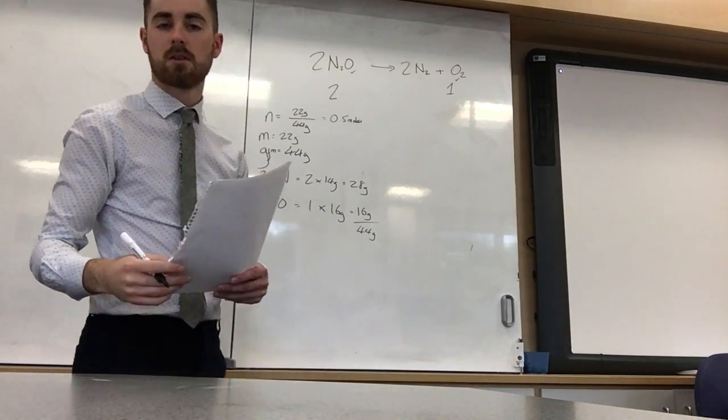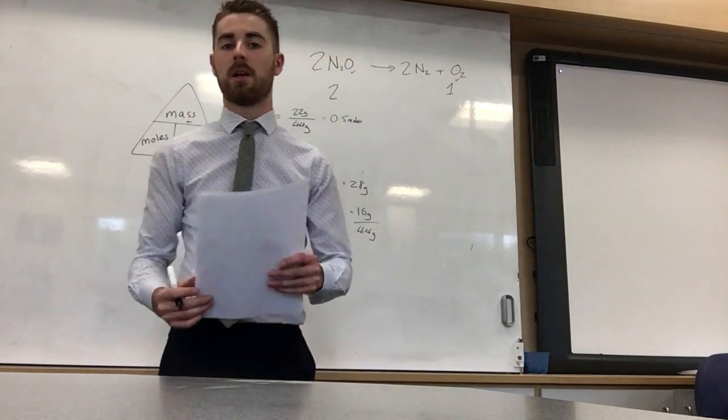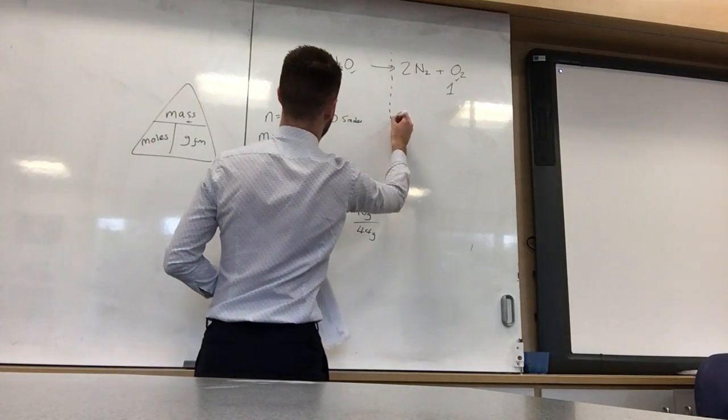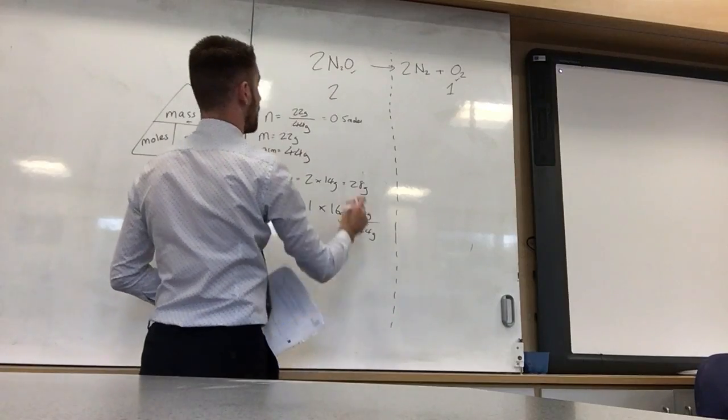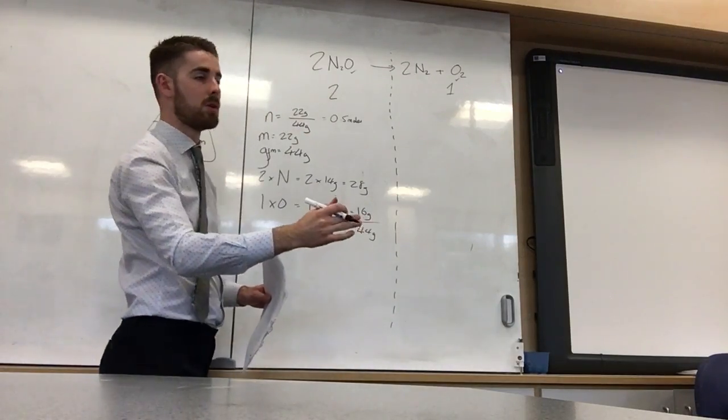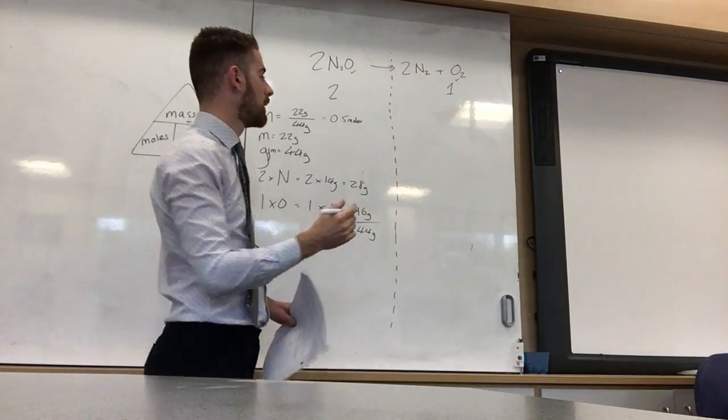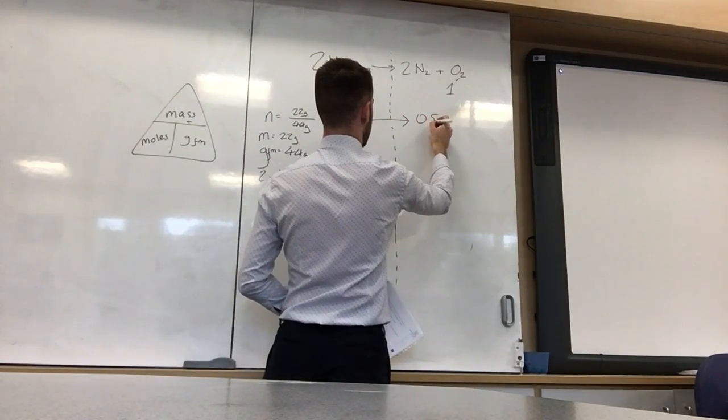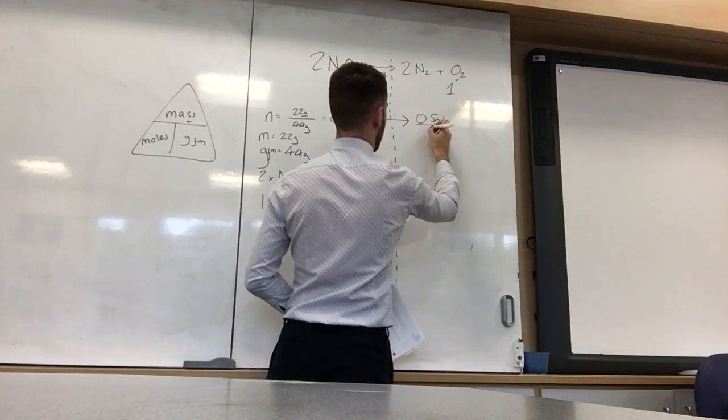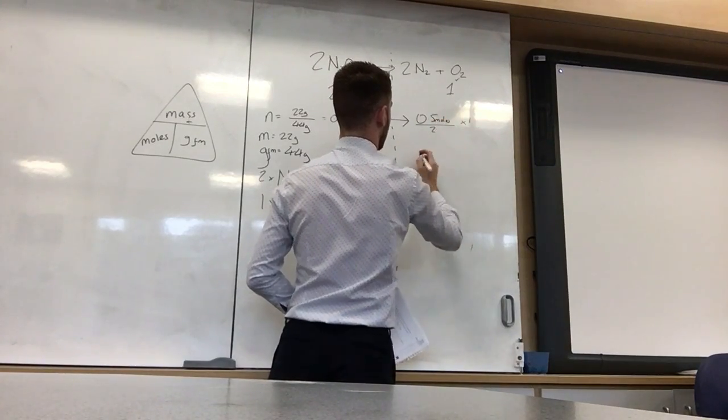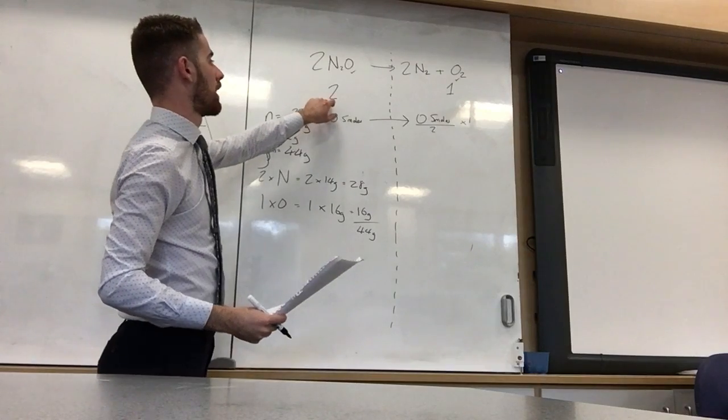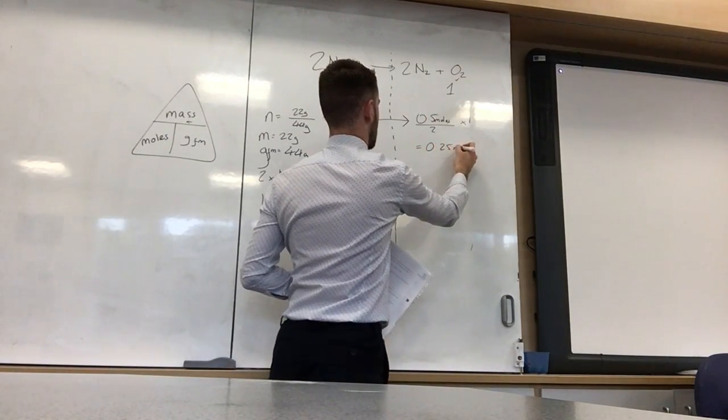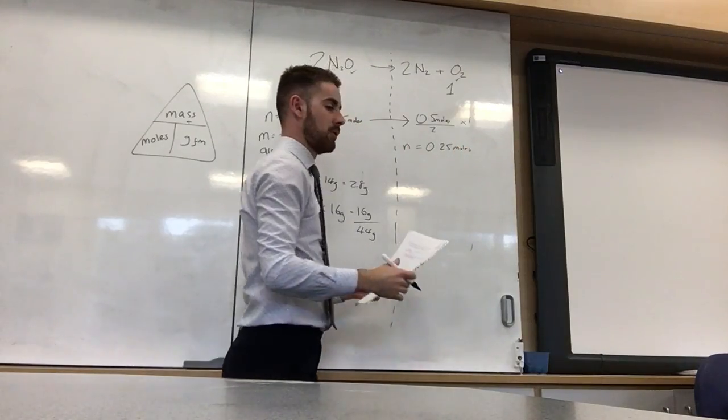So we have 22 grams of dinitrogen monoxide, which equates to 0.5 moles. So let's draw a dotted line down to separate. Now, the 2 to 1 ratio, which means find how many moles of oxygen we have. We're going to have to divide 0.5 moles by 2 and multiply it by 1. Because we divide it by 2 and multiply it by 1, which gives us 0.25 moles. So n is 0.25.